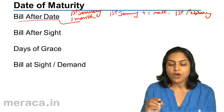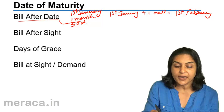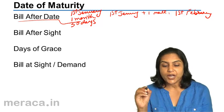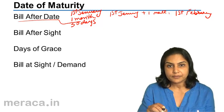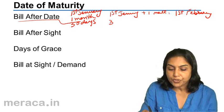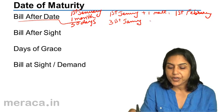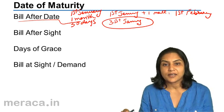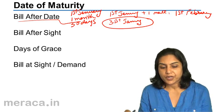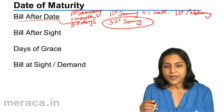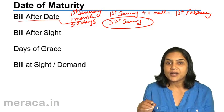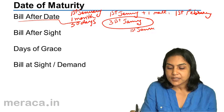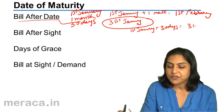One more example. Instead of one month after 1st January, suppose it says 30 days after date. 'After date' means the date of the bill. So it is 30 days from 1st January. Now January has 31 days, so when we say 30 days after 1st January, the date would be 31st January — that is, 1st January plus 30 days equals 31st January.